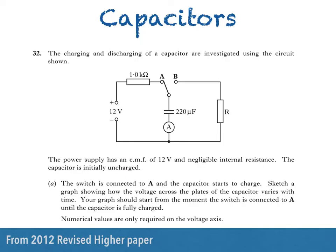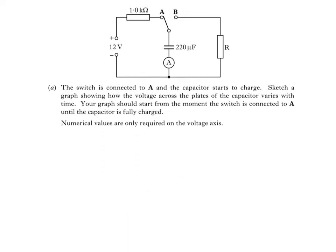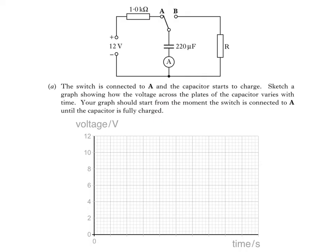I'll start by giving myself more room for the graph. The first thing to notice is that voltage is on the y-axis and time is on the x-axis. Remember we're also asked for numerical values on the voltage axis. You can see from the circuit diagram that the supply voltage is 12 volts.